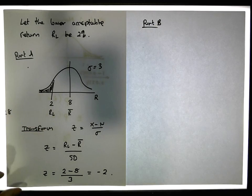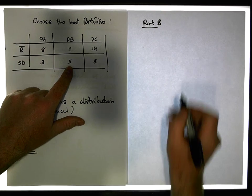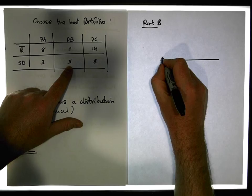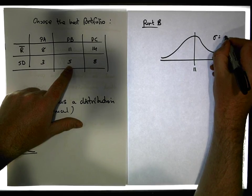Its return is 11% and standard deviation is 5. So its center value is 11 and its standard deviation, its sigma, is equal to 5.